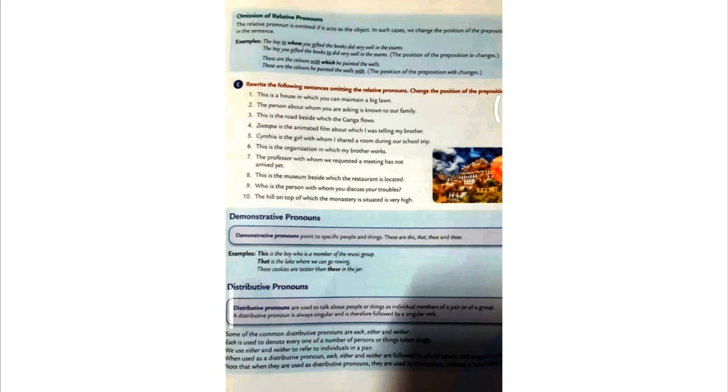A distributive pronoun refers to a person or thing one at a time. One at a time, it only refers to a person or thing one at a time. If I say each of the boys, I am talking about one individual boy. Either of the roads, if I say that, then I am talking about individual road. That's why they are always singular in nature. Okay, next.